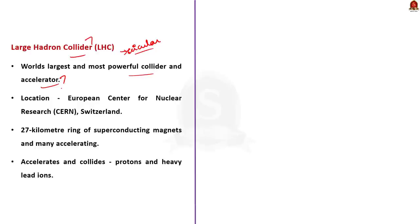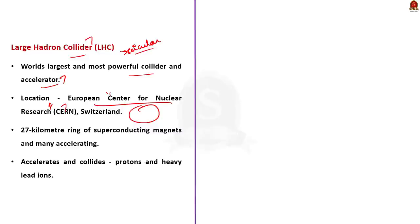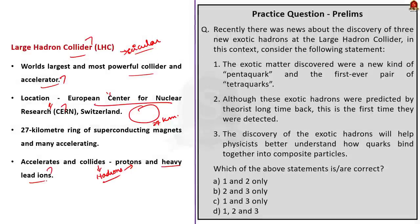The Large Hadron Collider is situated at the European Centre for Nuclear Research (CERN) in Switzerland. It consists of a 27-kilometer ring of superconducting magnets and many accelerating structures to boost the energy of particles. The Large Hadron Collider accelerates and collides hadrons such as protons and heavy lead ions.